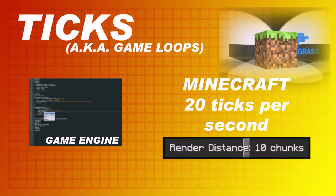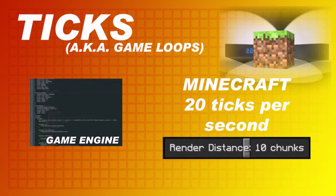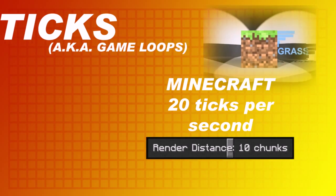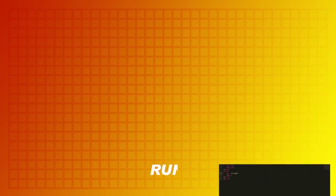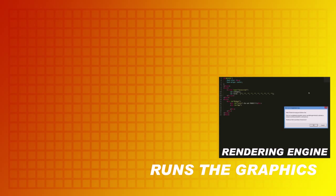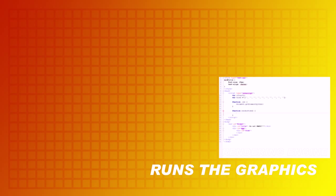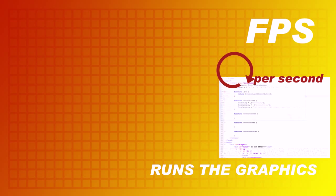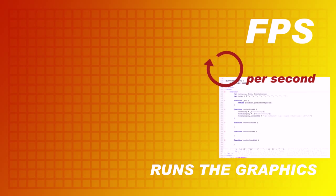But wait — shouldn't that be for the rendering engine? Well, that value applies to both engines. The rendering engine is just a code tool, but it runs the graphics of the game. Frames per second is how many times the rendering engine will run in one second.